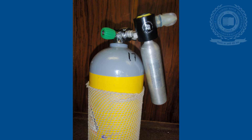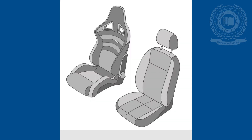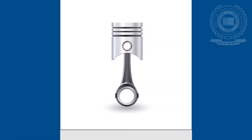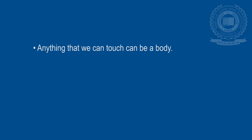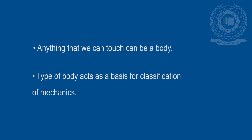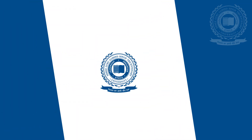Bodies can be anything like a box, a chair, flowing water, air contained in a cylinder, or even the cylinder itself — a car seat, a bridge, a piston, an aircraft wing, etc. In other words, anything tangible that we want to study about will become the body under consideration. Types of bodies also act as a basis for classification of engineering mechanics, which we will come across later in this lecture.